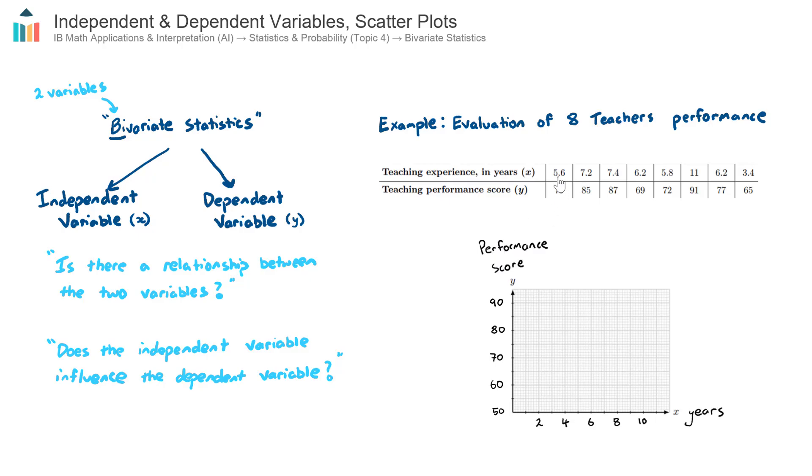This first coordinate here, we go to 5.6 on the years axis, so that's about here. I won't be too exact, I'll just do it roughly. And then up to 79 on the y, so that's up to about here. Let's do the second coordinate now: 7.2 on the years, so about here, and then 85 on the y. I'm just going to pause the video now and plot the remaining six data points.